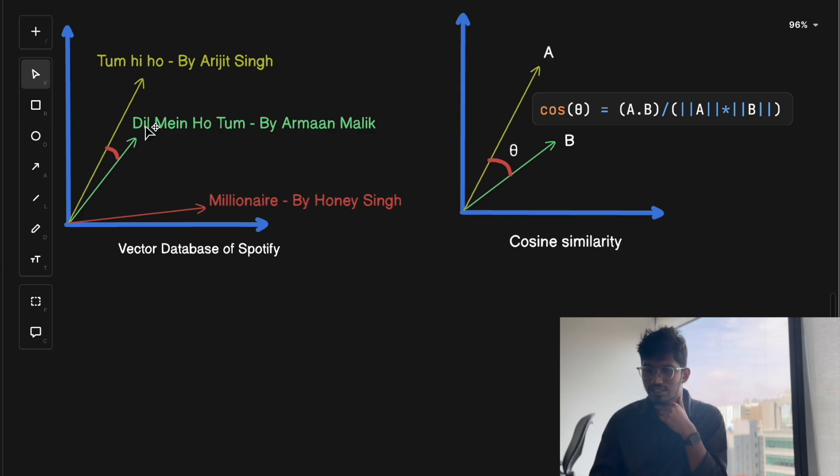Then there is another method to calculate similarity, that is Euclidean distance. Euclidean distance is just measuring the straight line distance between two points. In simple terms, closer the points, the more similar the song. For example, if you see, the distance between this point and this point is smaller than the distance between this point and this point. So it means that Dil Mein Ho Tum is closer to Tum Hi Ho than Millionaire song. This is one more method to calculate the similarity between two vectors or two songs. This is how Spotify finds songs that are near each other in this giant space of music.